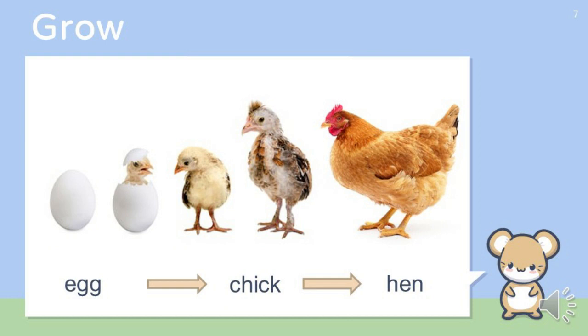Animals also grow. When a hen lays an egg, a chick hatches out from that egg. That chick grows to become a hen.